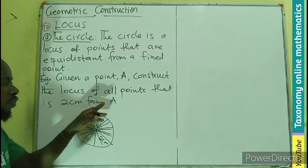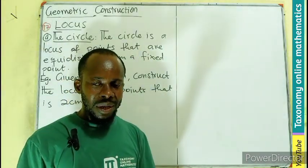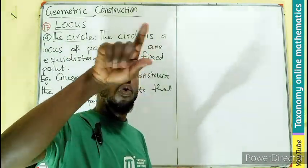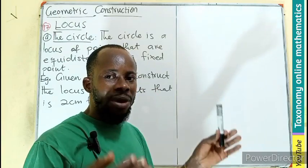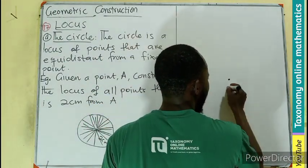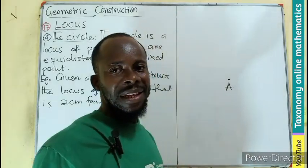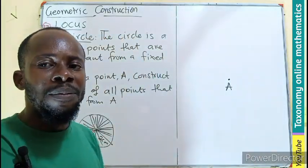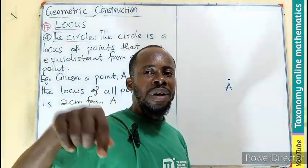So we are going to indicate our point. It will be A. So this A forms the center of the circle.